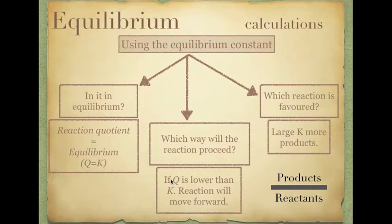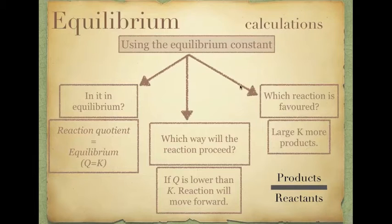If Q is higher than K, that means you have more products than reactants than you would at equilibrium, so the reaction will proceed backwards to reach equilibrium. The equilibrium constant can also tell you which reaction is favoured — which one is more likely to occur to a greater extent, and which one is better in terms of the equation.